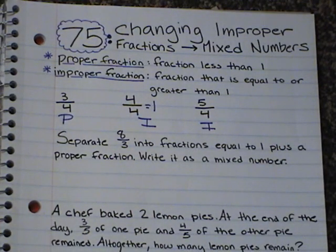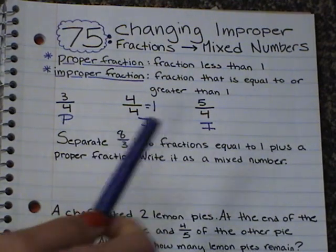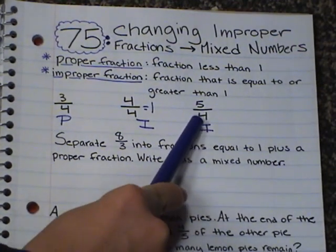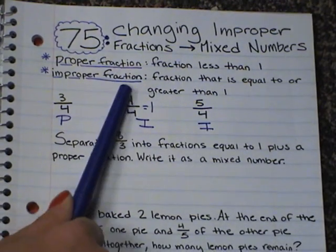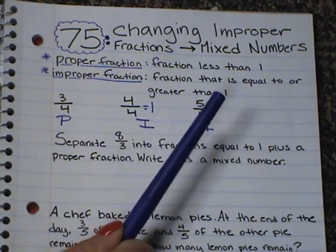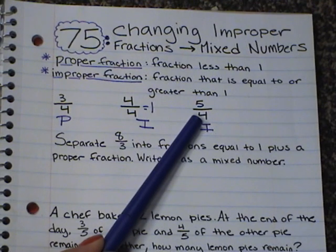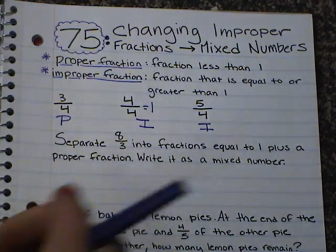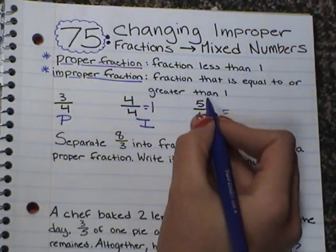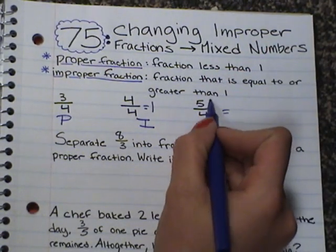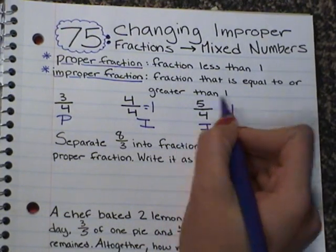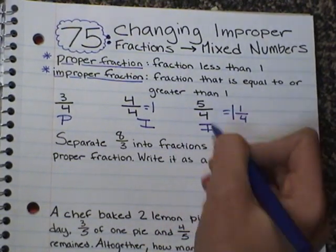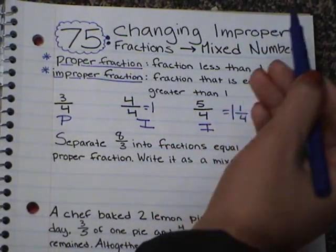Every improper fraction can be changed. An improper fraction can be changed to a whole number or a mixed number. So an improper fraction could be changed to one full whole number, or it could be changed to a whole number with another fraction — that would be called a mixed number. For example, 5 fourths: 4 out of 4 makes one whole, and then we have 1 left over, making it a mixed number — a whole number with a fraction.